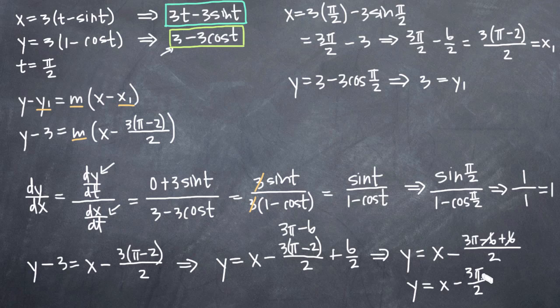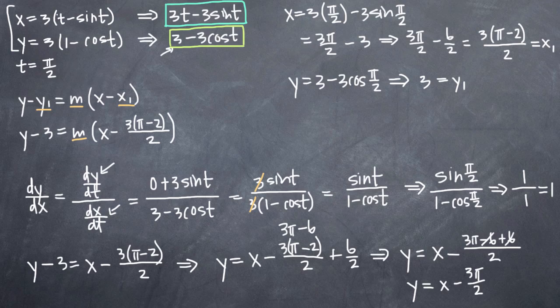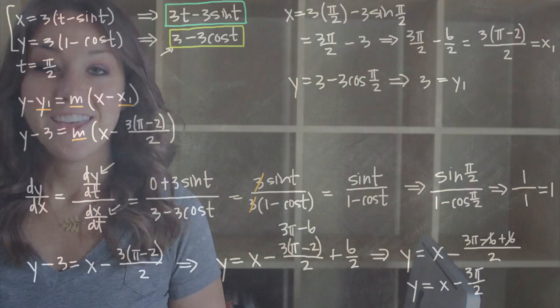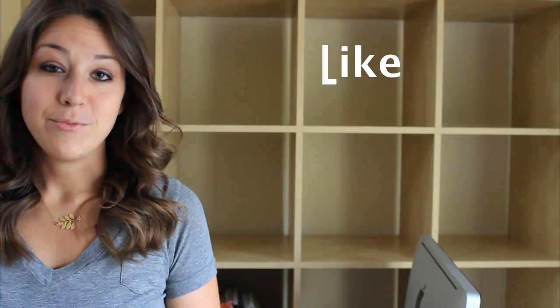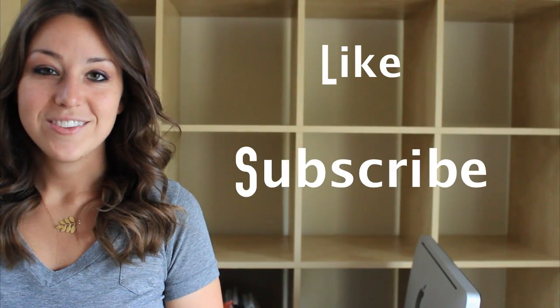And that's our final answer. This is the equation of the tangent line at the point t equals pi over 2, or the derivative at t equals pi over 2 of the parametric equations for x and y. I hope you found this video helpful — if you did, like the video and subscribe to be notified of future videos.